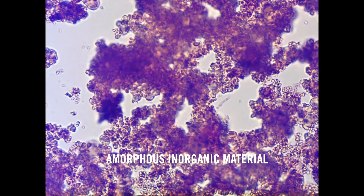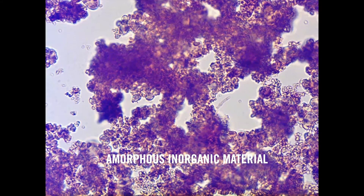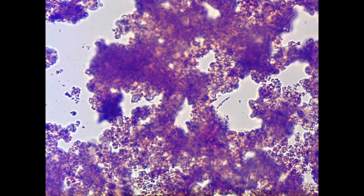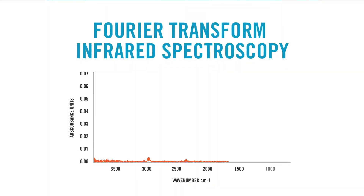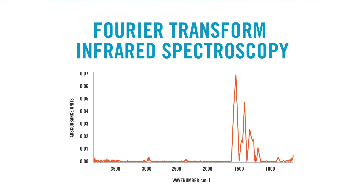We also saw amorphous inorganic material, which just means that it doesn't have a crystalline structure. For our organics, we found fungi. But the bulk of the analysis mostly revealed inorganics, which we expected from our loss on ignition testing. Our next step is to look at the foulant using Fourier transform infrared spectroscopy. During this analysis, unique peaks are seen which correspond to different functional groups. This analysis revealed the presence of iron peaks as well as calcium hydroxide peaks. No significant organic peaks were observed during this analysis, so we know that organics are not one of their main foulants.